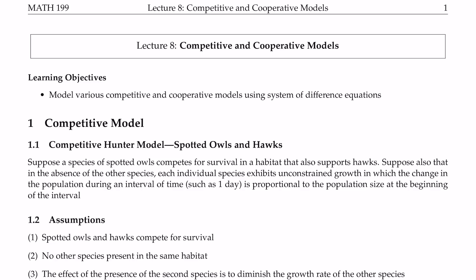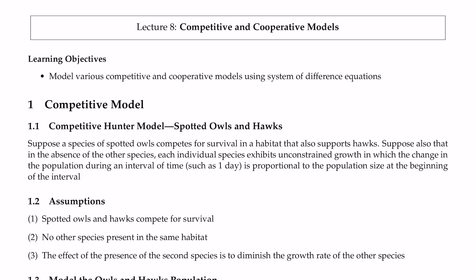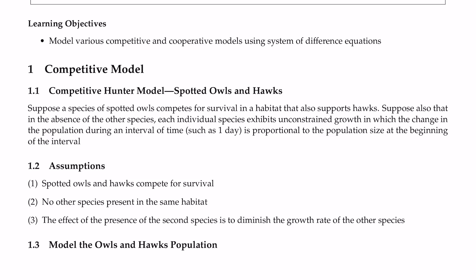Today we talk about competitive and cooperative models. We continue using a system of difference equations to model various scenarios where two species cooperate together or two species compete for the same food source. The competitive model here is between owls and hawks. They're going to fight each other for the same food source — probably mice, squirrels, for example.